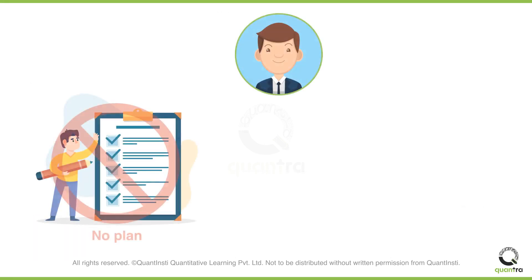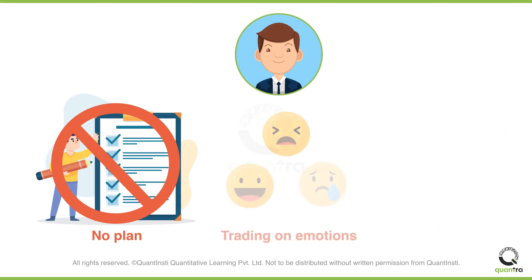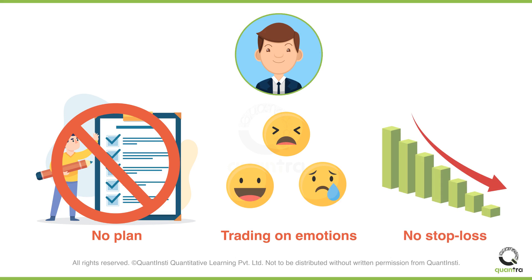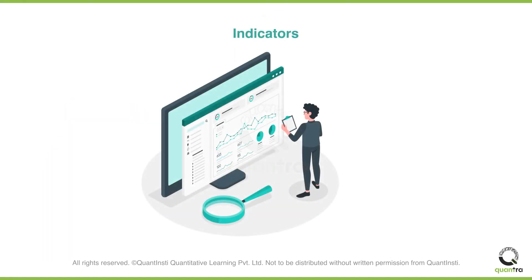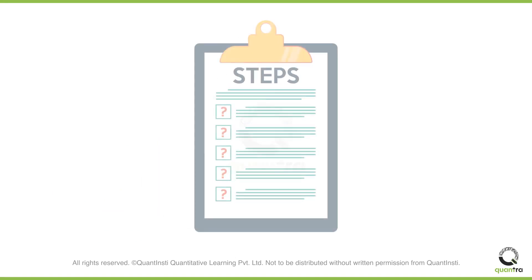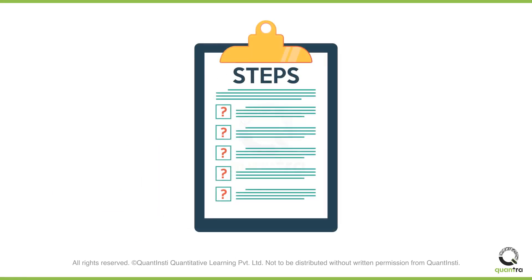John did not have trading rules in place, and often entered the trades based on his gut feeling. He also did not have a plan of when to exit the trades. He did not use any tools or indicators to gauge if the markets would really go up. Moreover, he was not clear about the steps he must take if his strategy did not work out as planned.